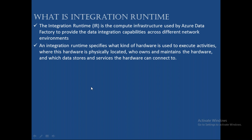Integration runtime specifies — depending on the type you are using — where this integration runtime is located, who is maintaining it, and what all sources it can connect to. Three key points to understand: first, where this integration runtime is located; second, who is going to manage it; third, what resources, storages, and databases it can connect to.